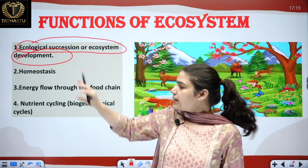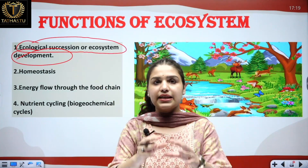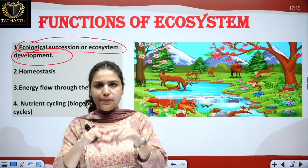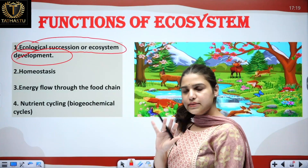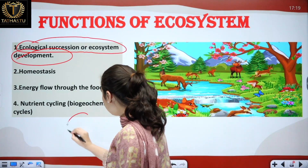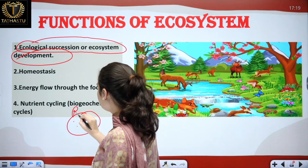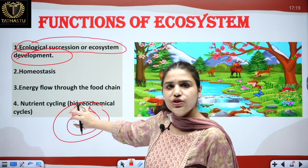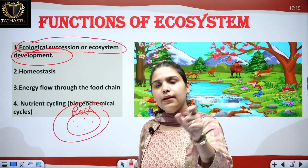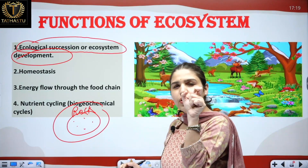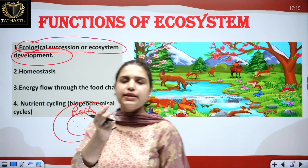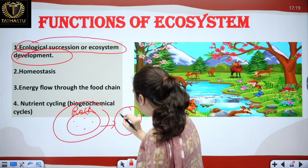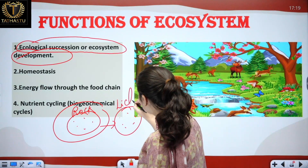Ecological succession, in simple terms, is the development or changes which take place over a certain period of time in a particular area. Let's understand this with an example. This is a bare rock — there are no plants, nothing exists on it. With time, small green growth appears; you may have witnessed this small grass which grows on a rock. This is known as lichens.